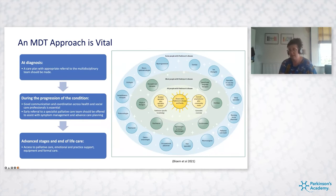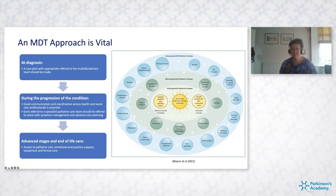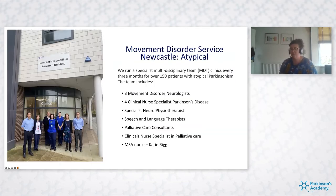One of the most difficult parts of looking after atypical patients is talking about advanced care planning and how important it is to refer to palliative care — maybe early on or at a later stage. Palliative care isn't just about end-of-life treatment; they're really good at looking at non-motor symptom management too.